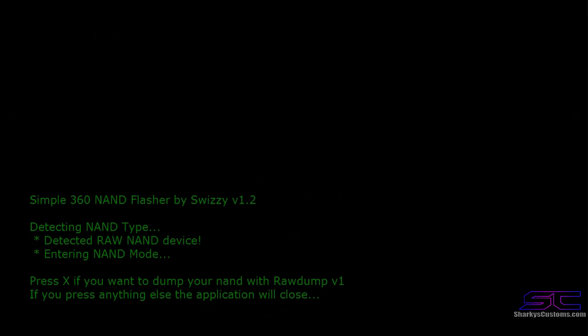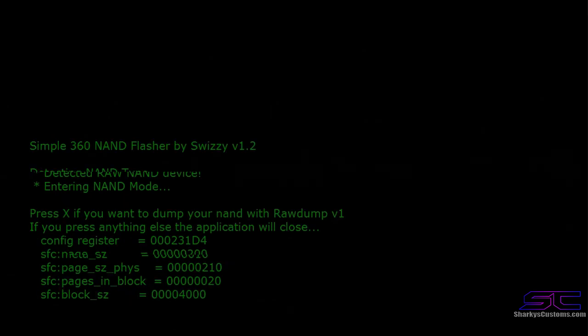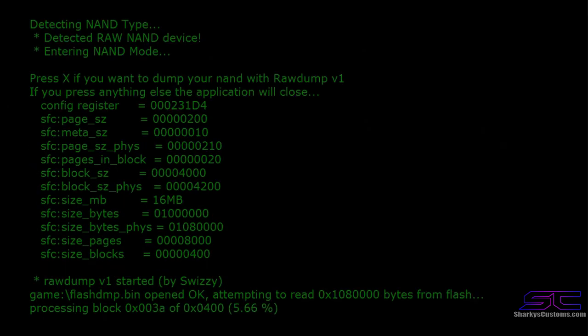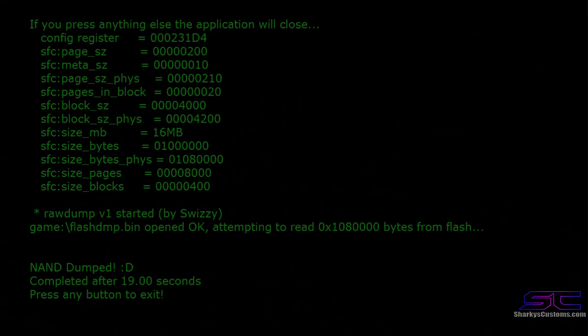Press X if you want to dump your NAND with RAR Dump V1. This is basically backing up your NAND. If you bought from somebody and they gave you a NAND dump, you really don't need that — you can simply dump your NAND right now and then update it with that dump. So press X and it will dump the NAND. Press any button to exit.